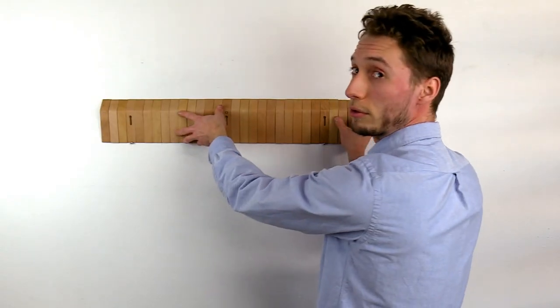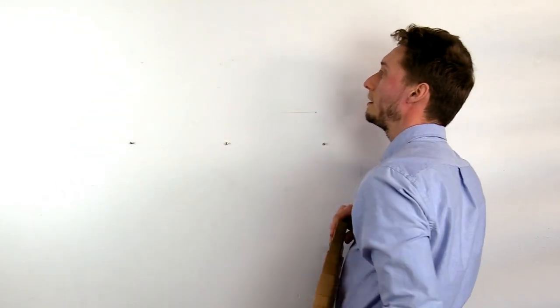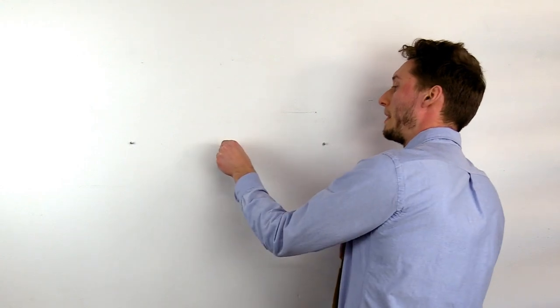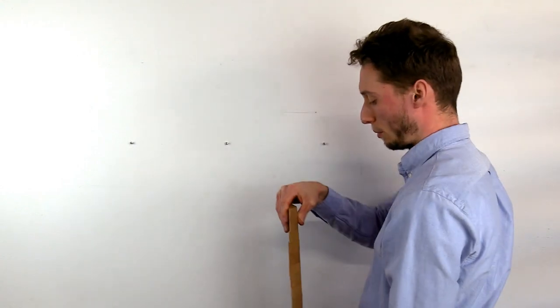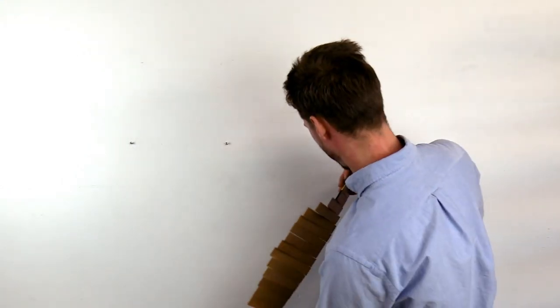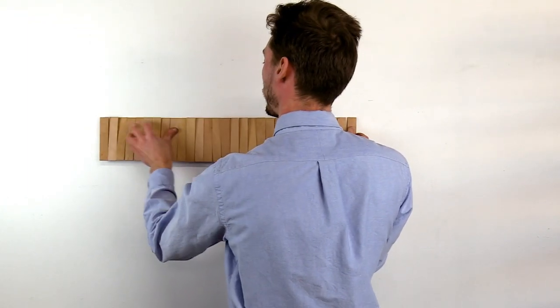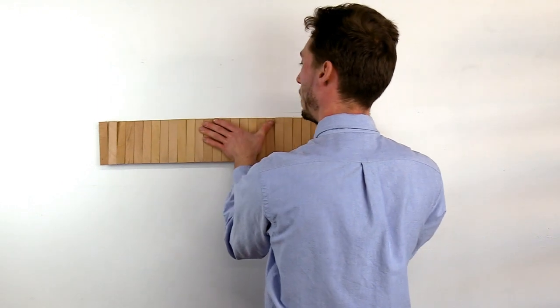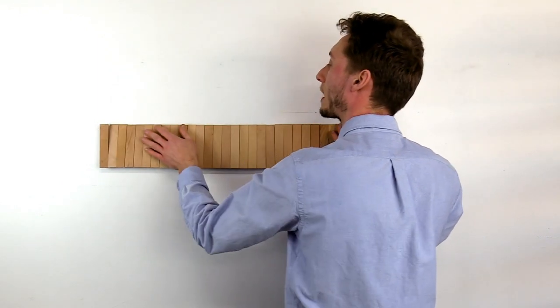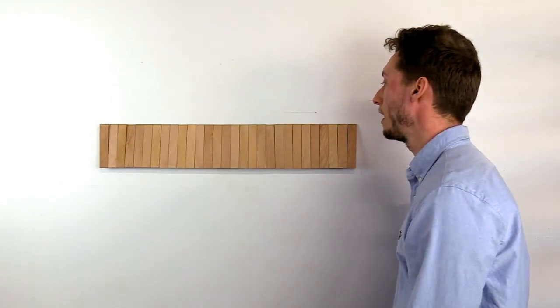Take your Switchboard and place it into the screws and slide it down. If the hooks aren't flush against the wall, just take the Switchboard off and tighten the screws a little bit.